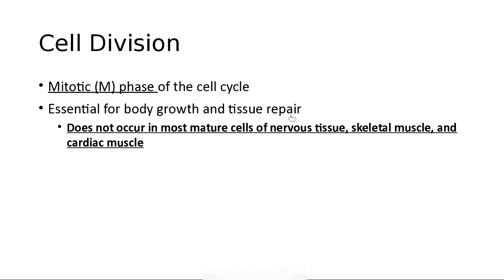Mitosis occurs in cells that are growing and is there for tissue repair. It does not occur in cells of the nervous system — if you damage brain, it's damaged. Skeletal muscle is the same. Cardiac muscle, as of now, is the same. Every now and then a scientist claims cardiac muscle can repair itself, but it gets disproven.